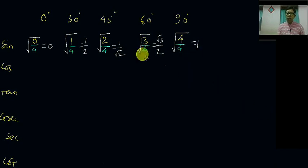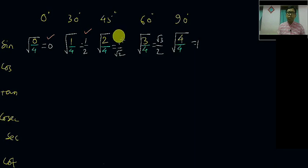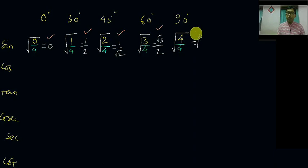So you have got the trigonometric ratios of sin: sin of 0 degree is 0, sin of 30 degree is 1/2, sin of 45 degree is 1 upon root 2, sin of 60 degree is root 3 by 2, and sin of 90 degree is equal to 1.